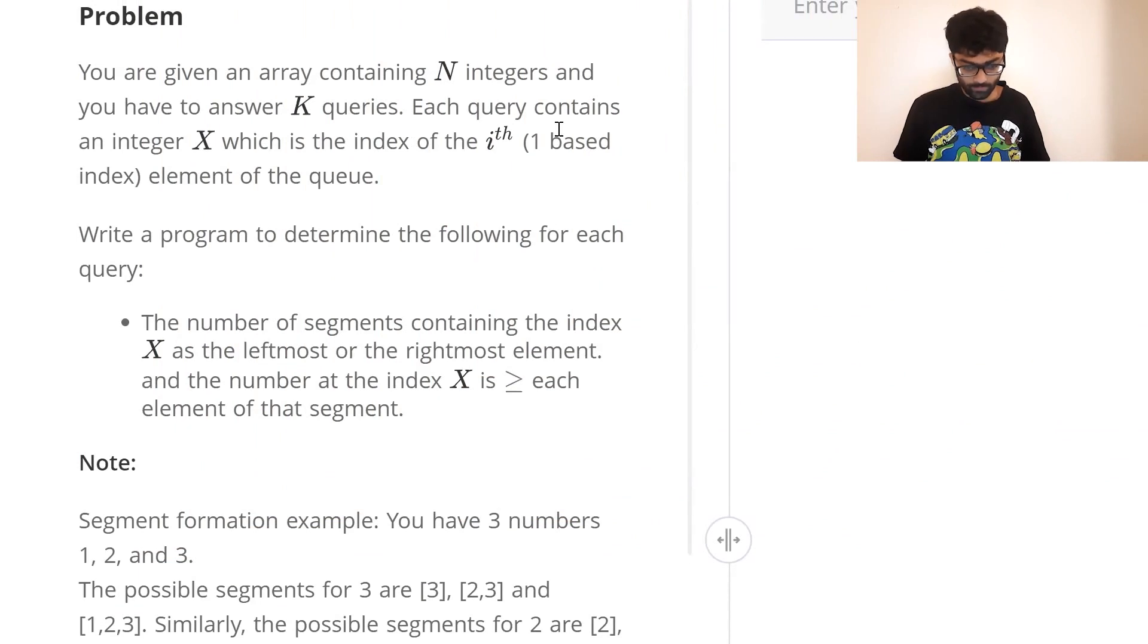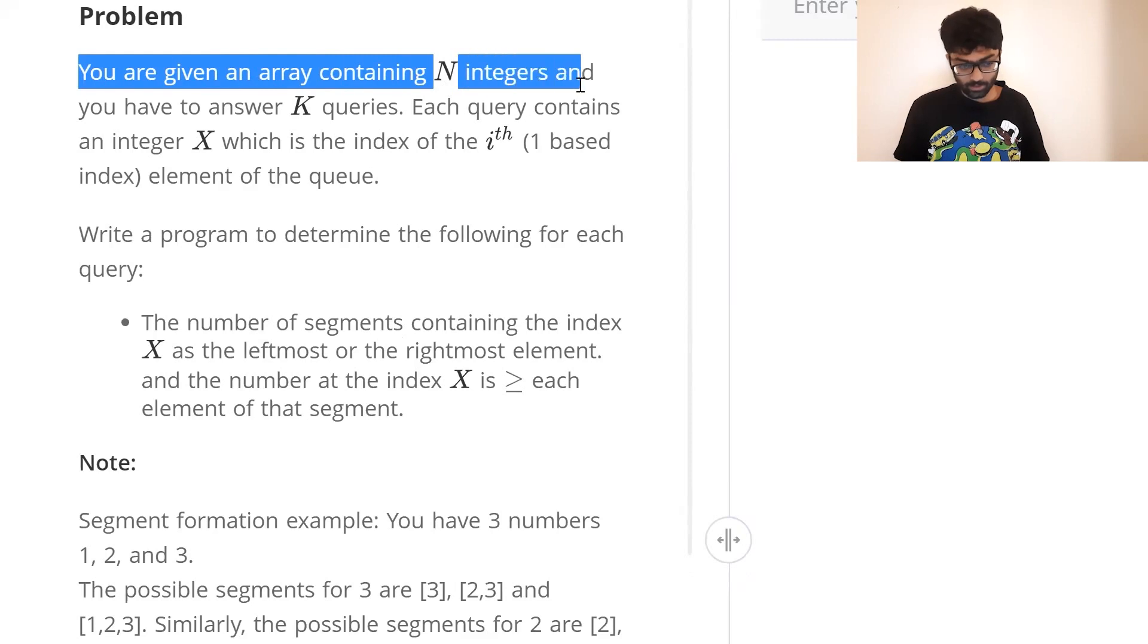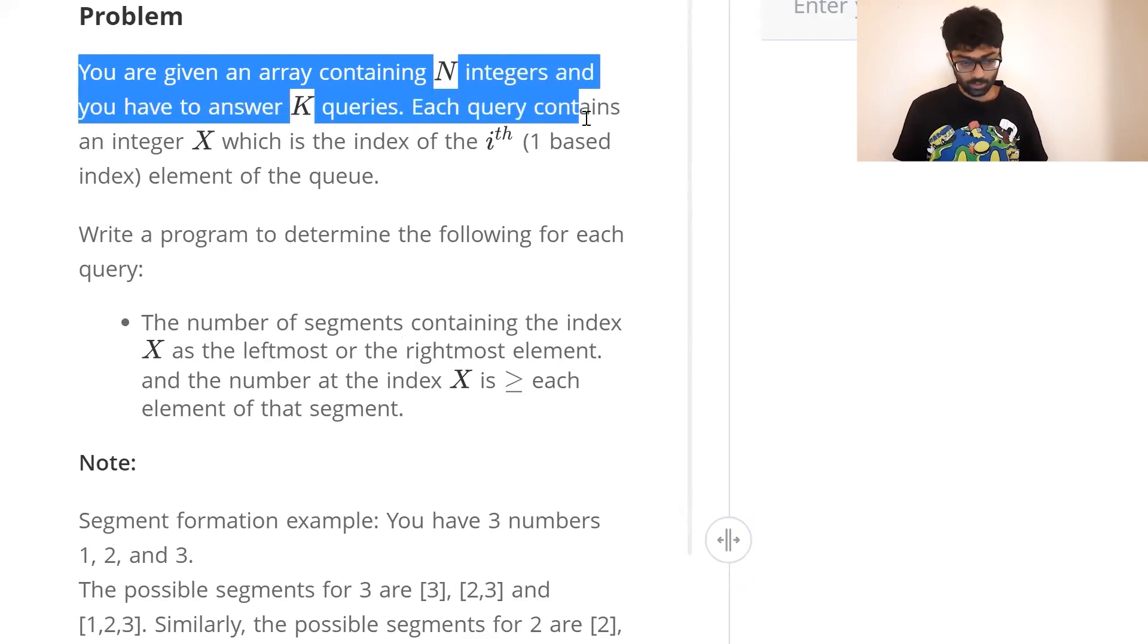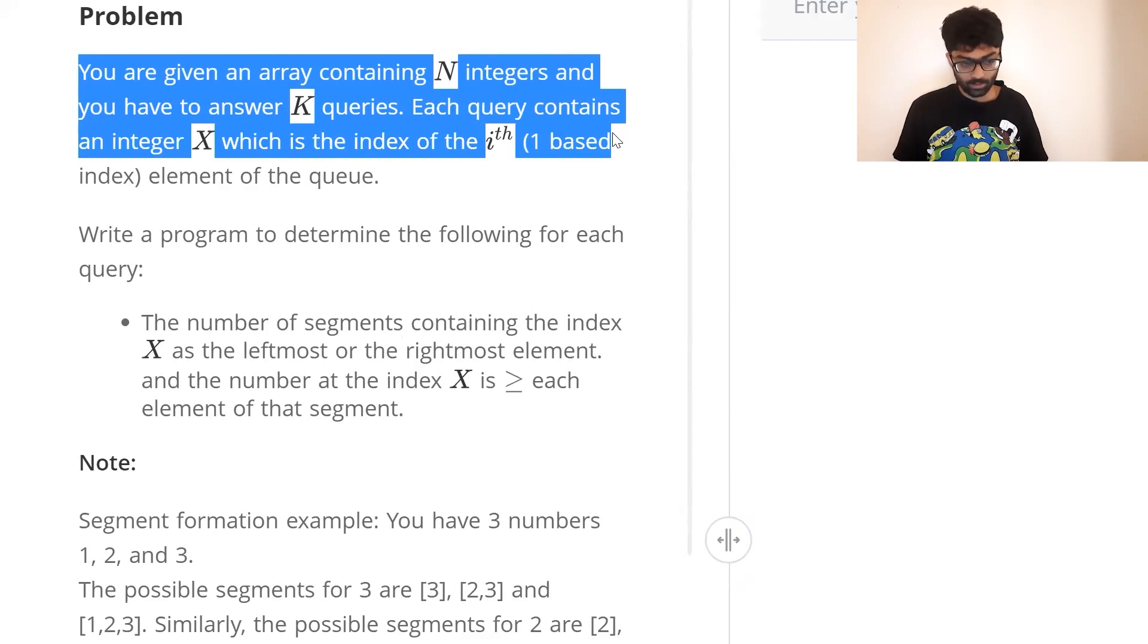It's a pretty short question. That's how I like them. You're given an array containing n integers and you have to answer k queries. Each query contains an integer x which is the index of the ith element of the queue.